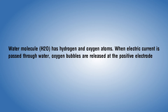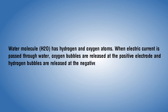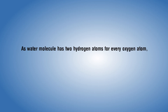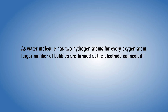Hydrogen bubbles are released at the negative electrode. As the water molecule has two hydrogen atoms for every oxygen atom, a larger number of bubbles are formed at the electrode connected to the negative terminal of the battery.